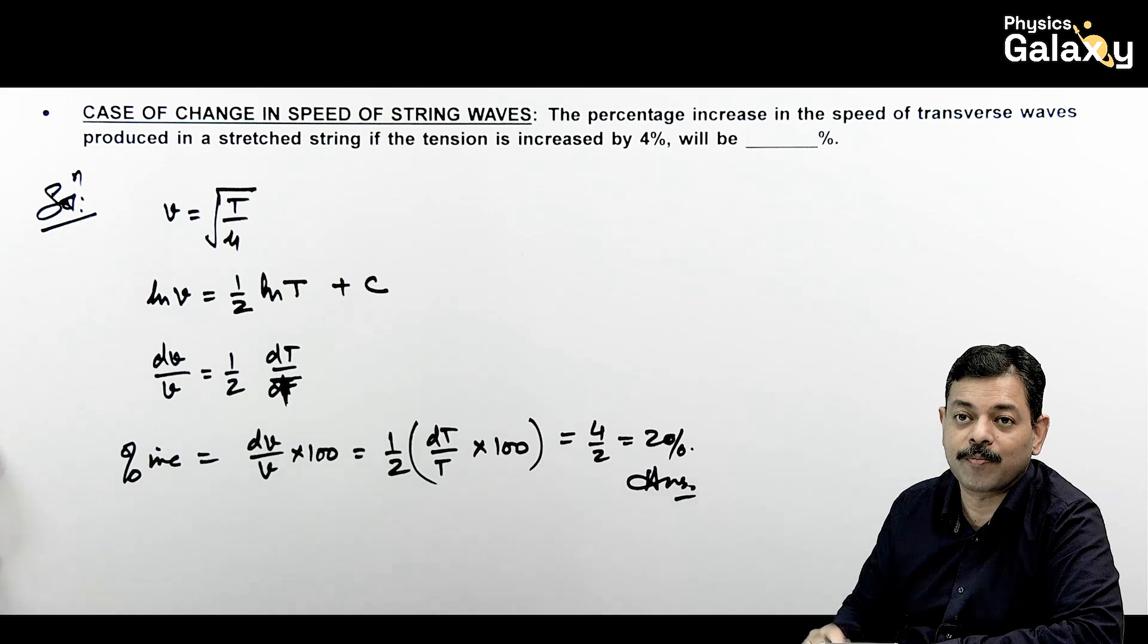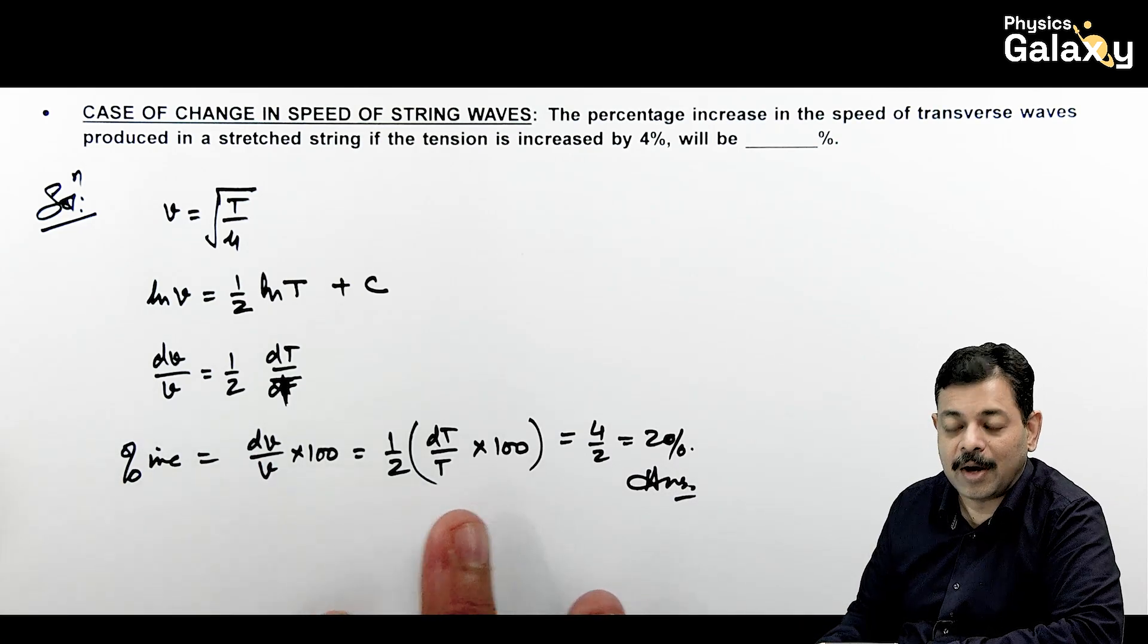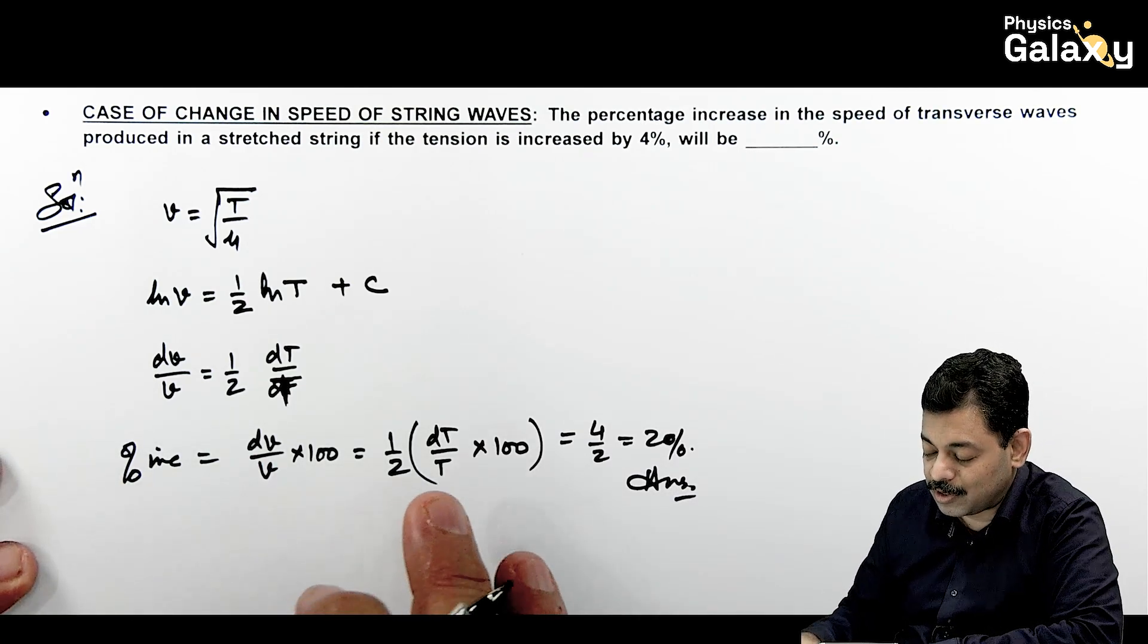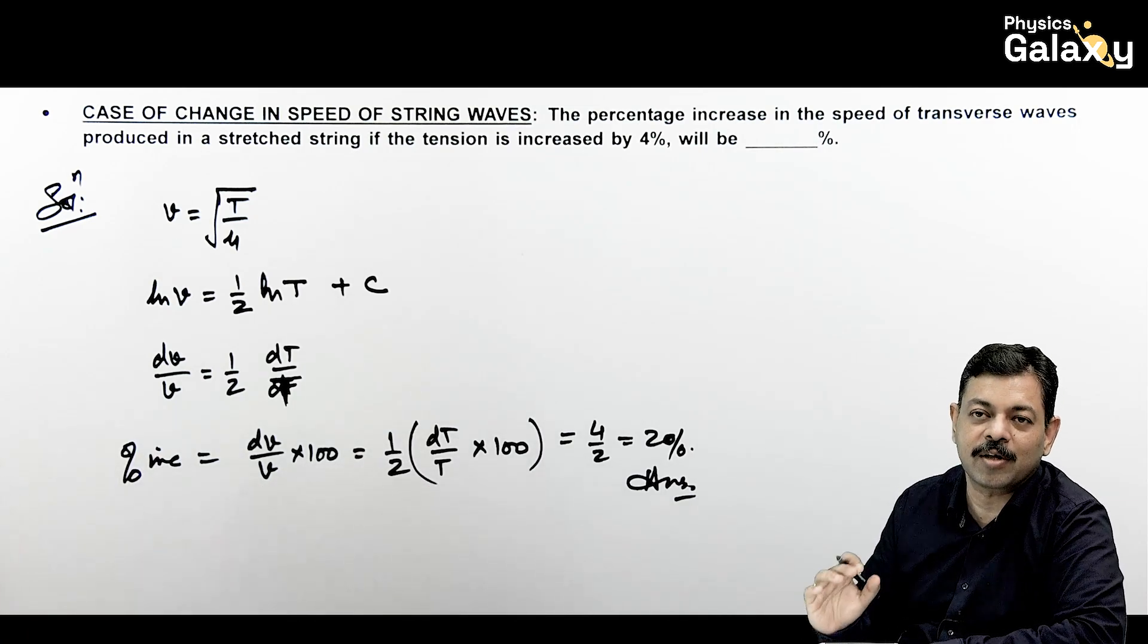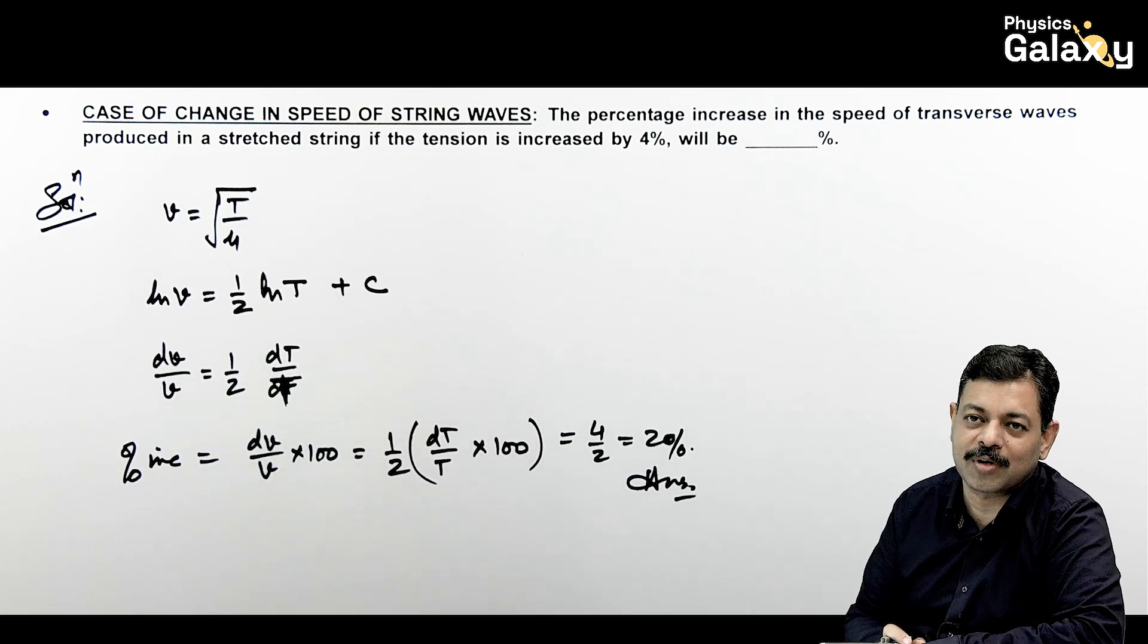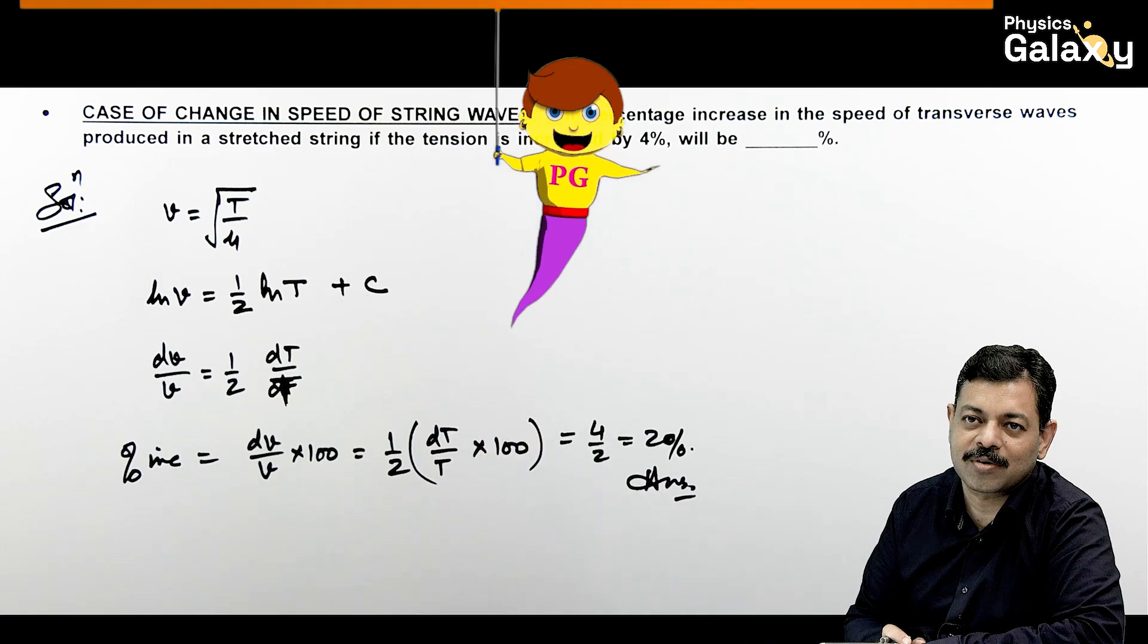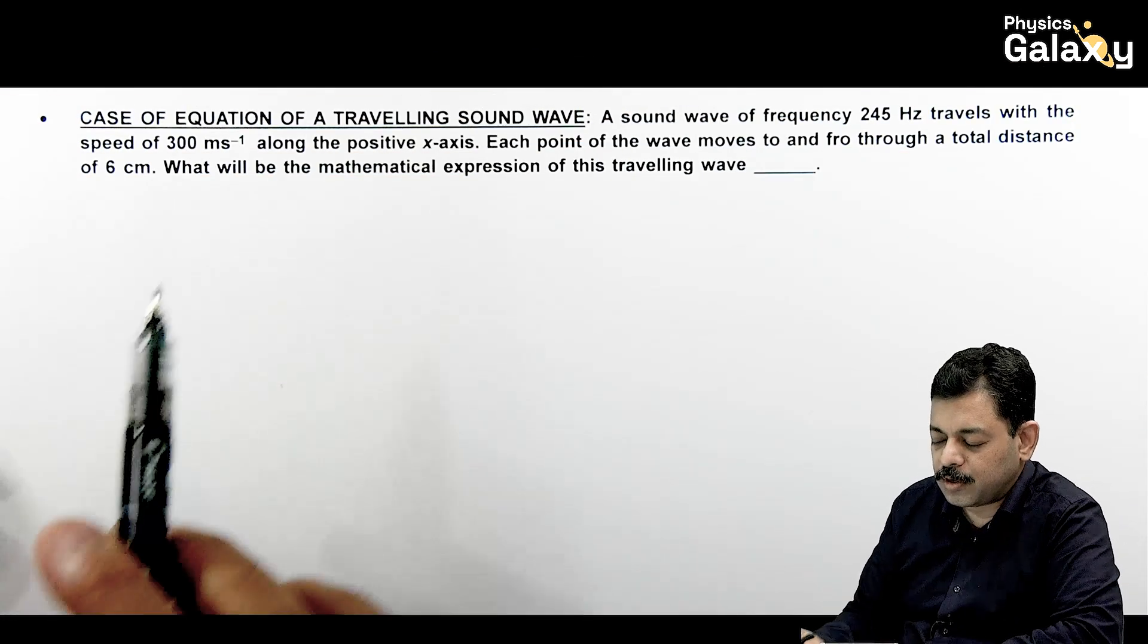You just do simple error analysis, change in one variable gives you the change in other variable. Multiply by hundred to transform fractional change into percentage change. Thank you. Another case where we will be talking about equation of a traveling sound wave.